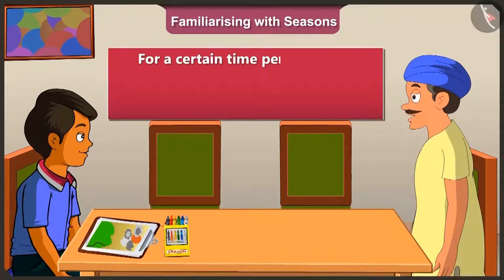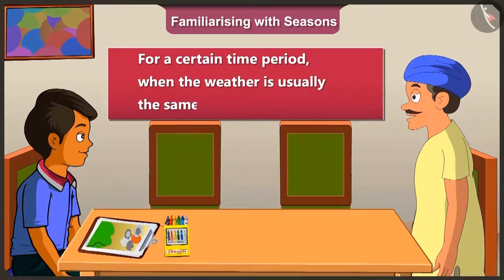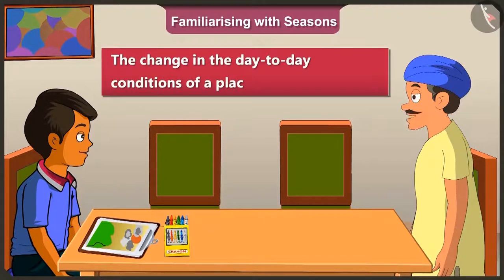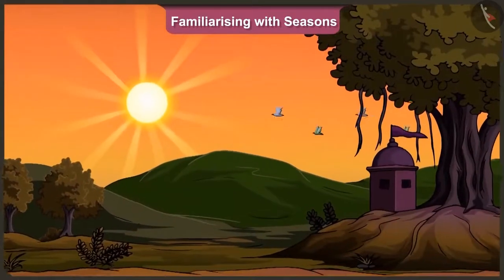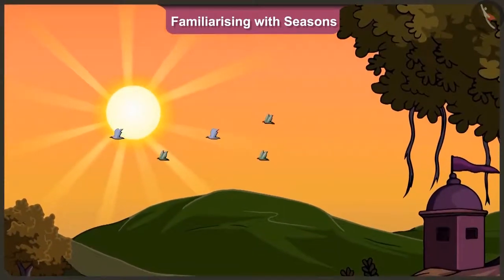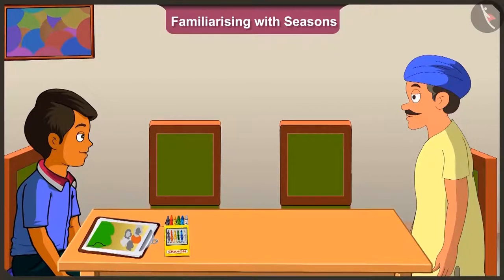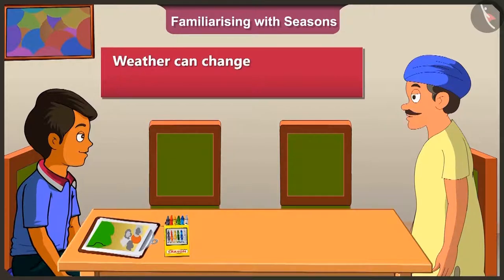For a certain time period, when the weather remains usually the same throughout, it is called a season. But uncle, what is weather? The change in the day-to-day conditions of a place is called weather. For example, there is bright sunshine in the morning and cloudy in the evening. But uncle, how are weather and seasons different from each other? Look, the weather can change every day, but not the season.